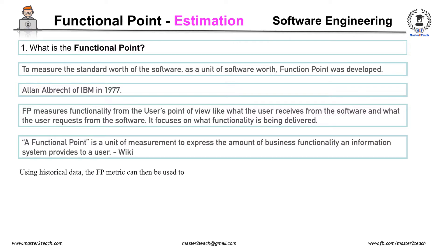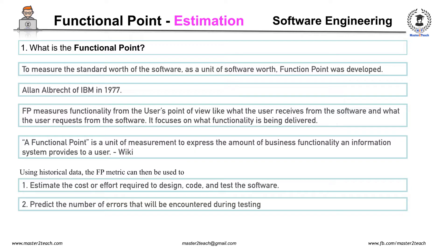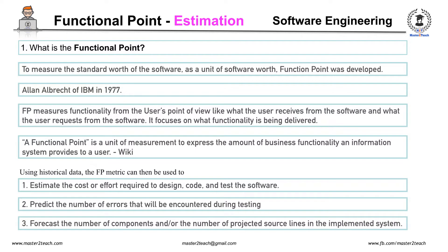Using historical data, the functional point metrics can then be used to estimate the cost or effort required to design, code, and test the software, predict the number of errors that will be encountered during testing, and forecast the number of components and or the number of projected source lines in the implemented system. Functional Points are derived using an empirical relationship based on countable measures of software information domains and qualitative assessments of software complexity.